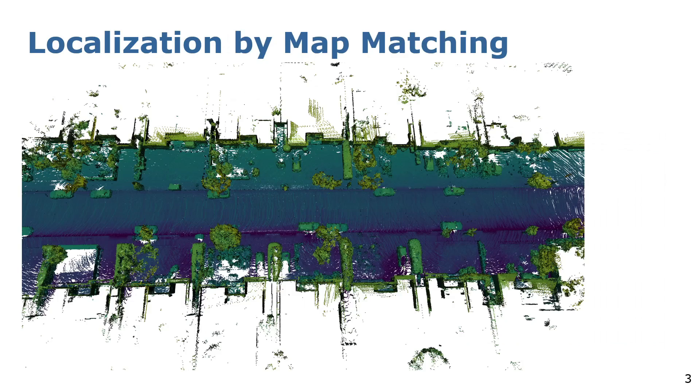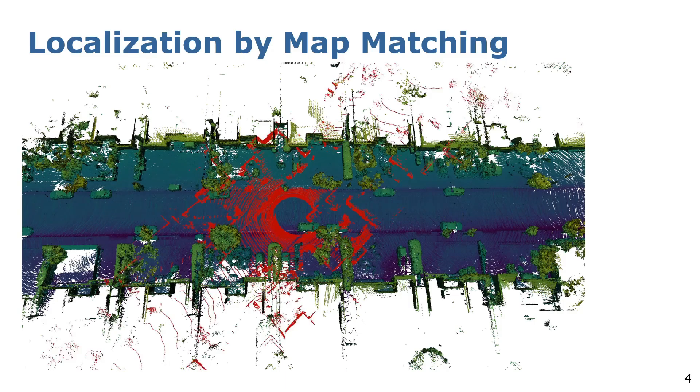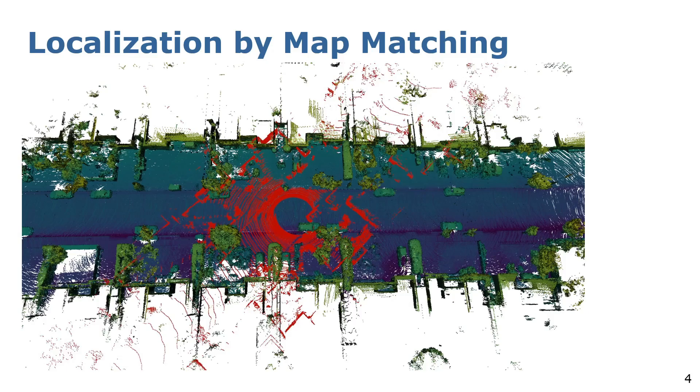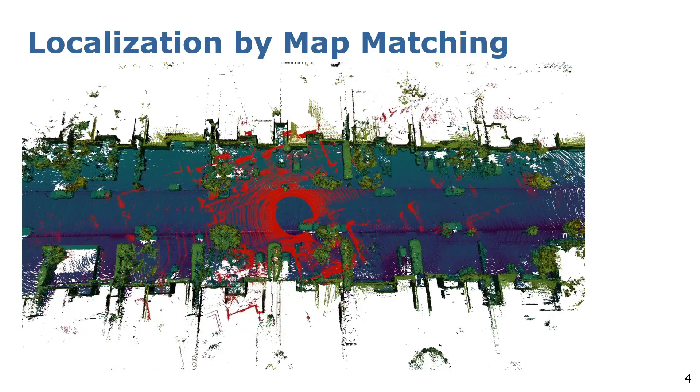When we have a constant stream of the point cloud data and know our position, then we can accumulate these scans to a point cloud map as here denoted in blue. Now we drive maybe a couple of weeks later again to the same environment and we want to know where we are in respect to our generated map. What we can do is we can take the current scan here in red and try to align it with the reference map.